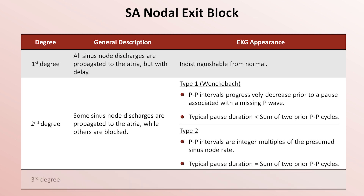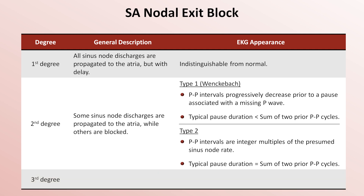Finally, in third degree SA exit block, no SA node discharges are propagated to the atria. From an EKG, this is indistinguishable from sinus arrest, a situation in which the sinus node appears to completely fail. To summarize, only second degree block is identifiable from EKG.